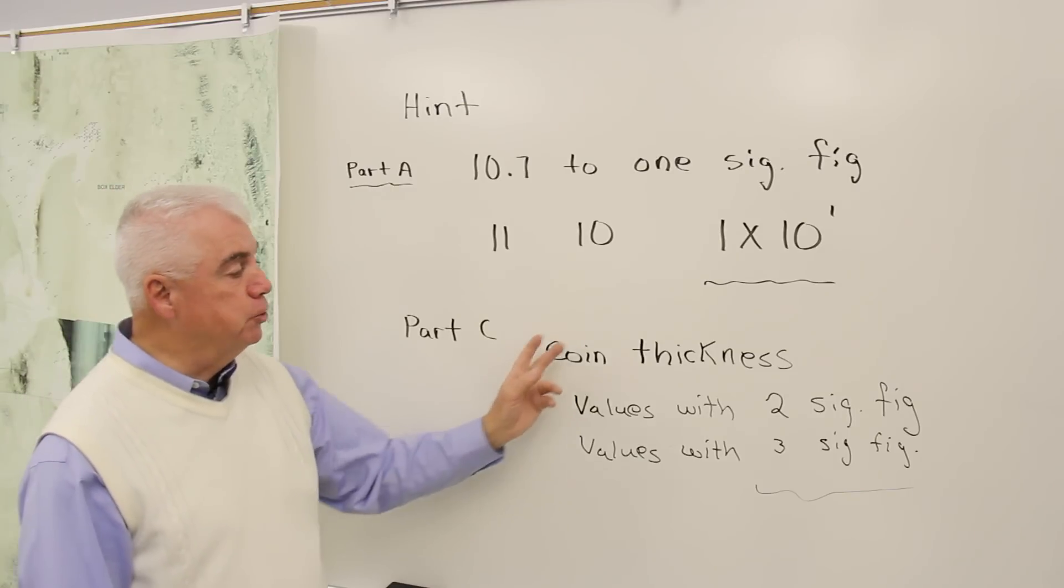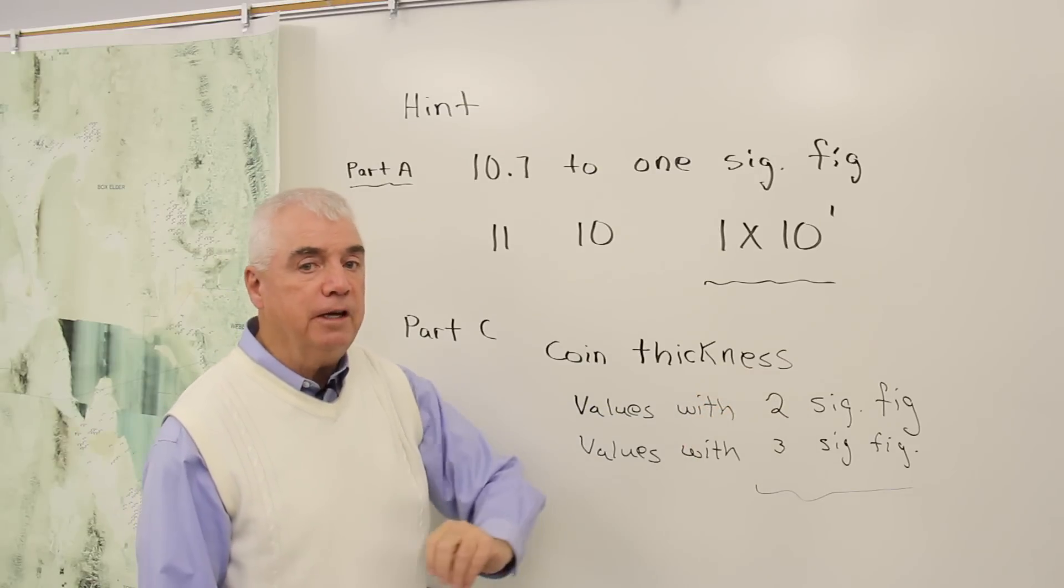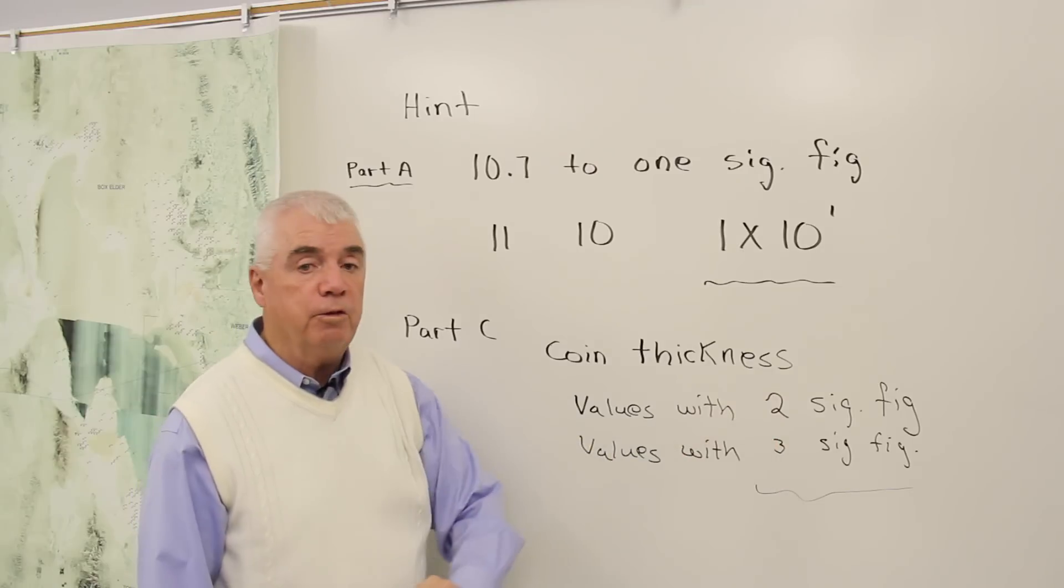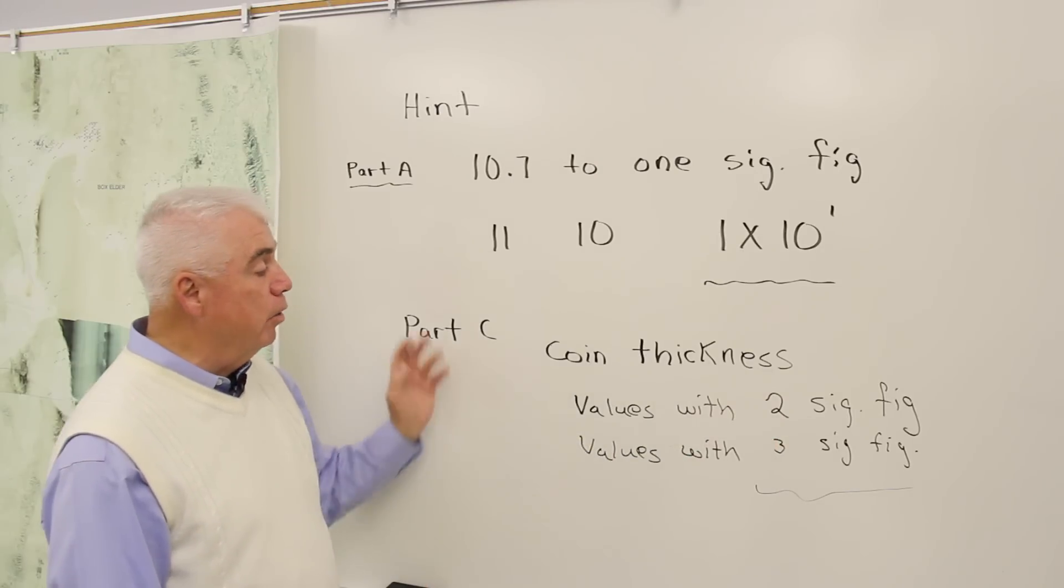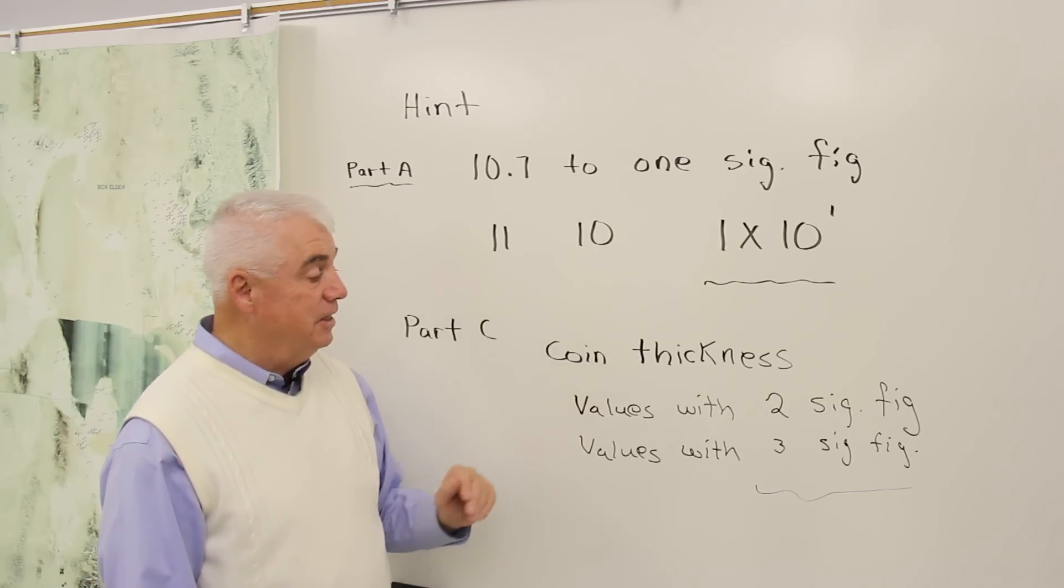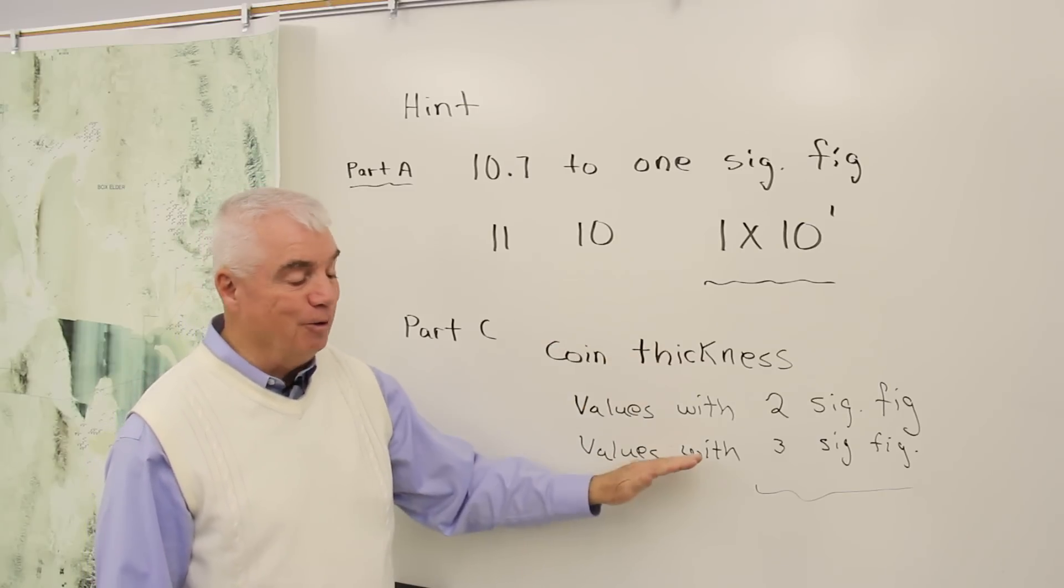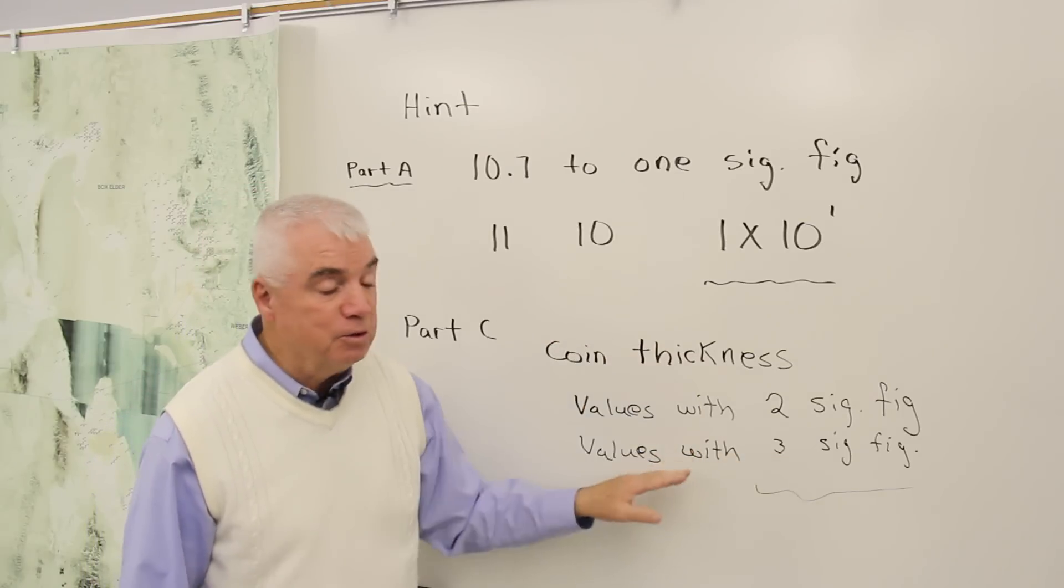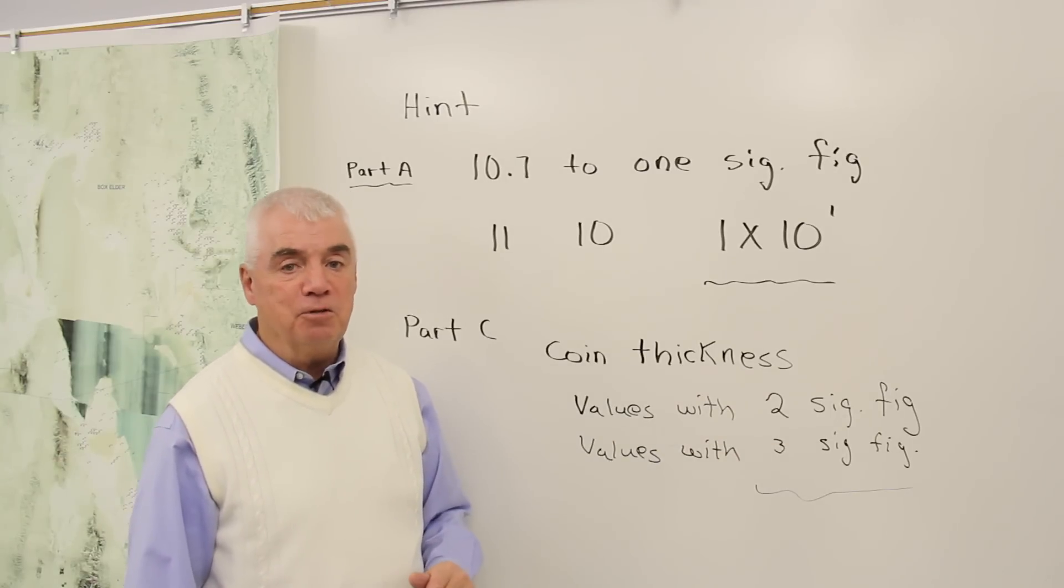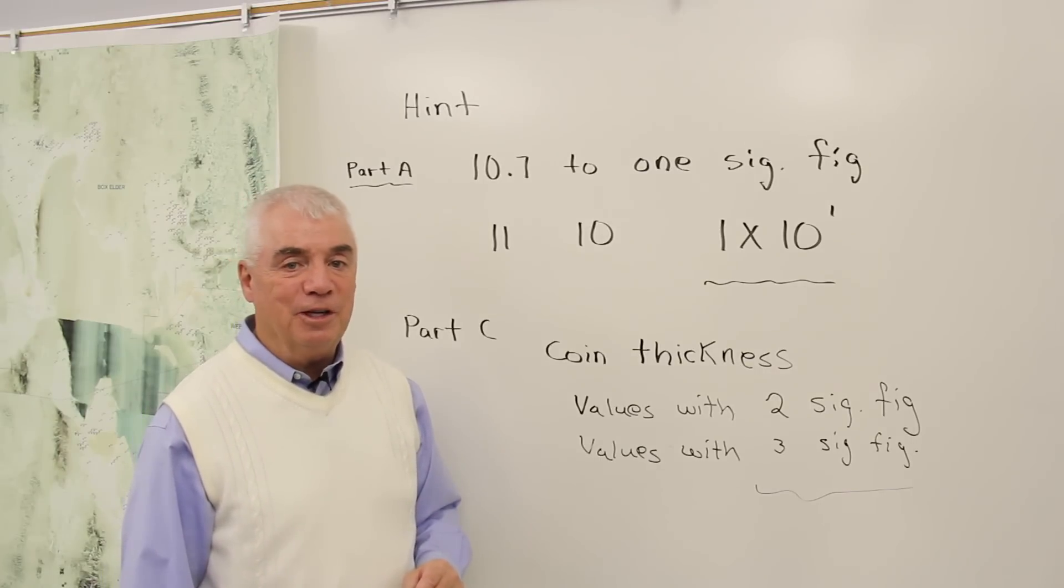Here's one more tip. In Part C, you're measuring coin thickness, and you come up with some values, perhaps with two significant figures, and maybe some values with three significant figures. And now if you're going to take that information and you want to use the best value to calculate the volume of a coin, which would you use? Well, we want to use the one with the most significance, wouldn't we? A synonym for significance is meaningful. So we want to use the most meaningful number that's available to us.